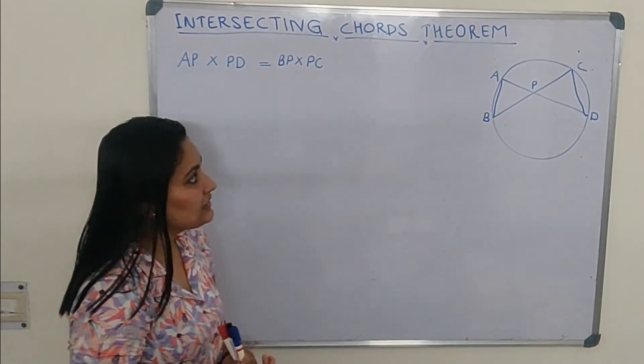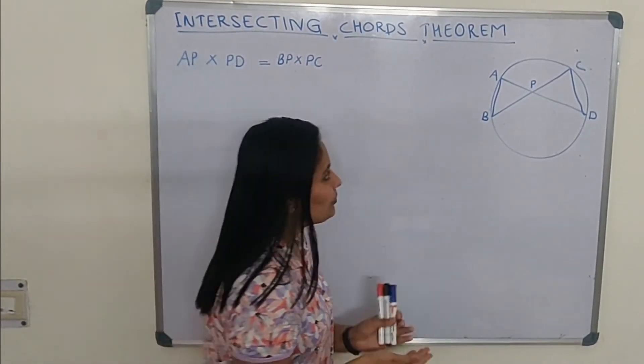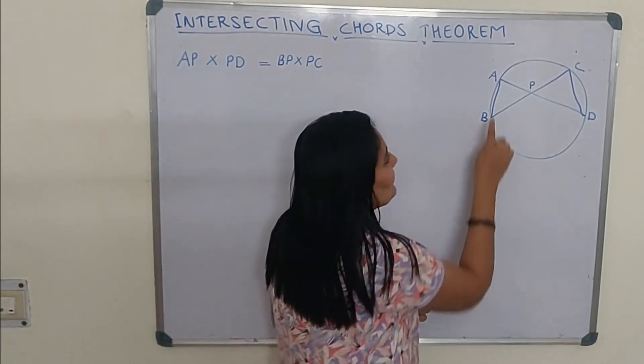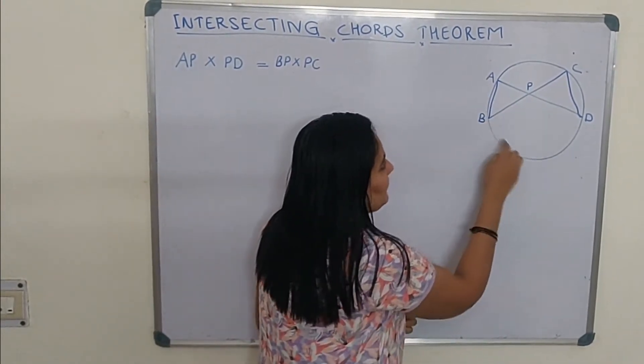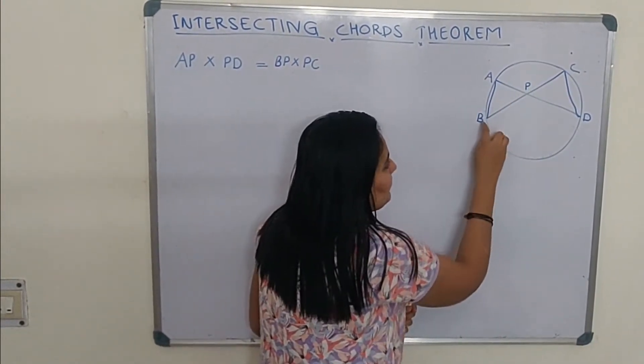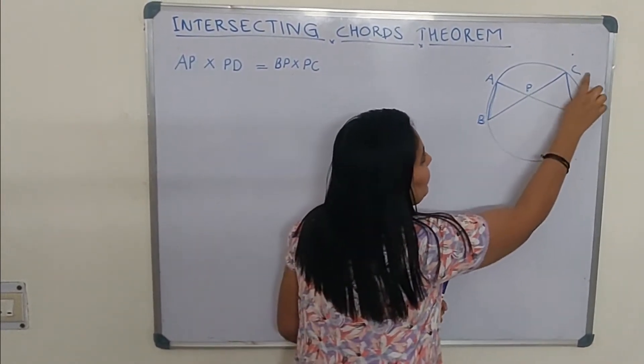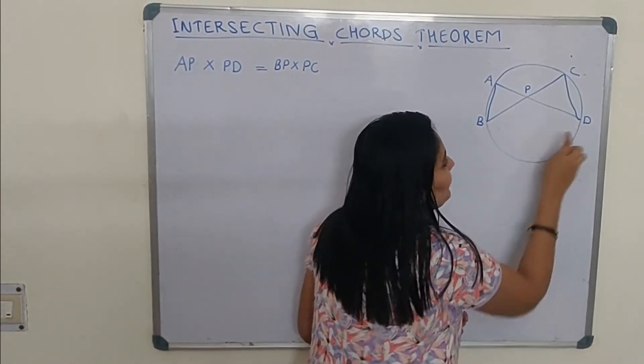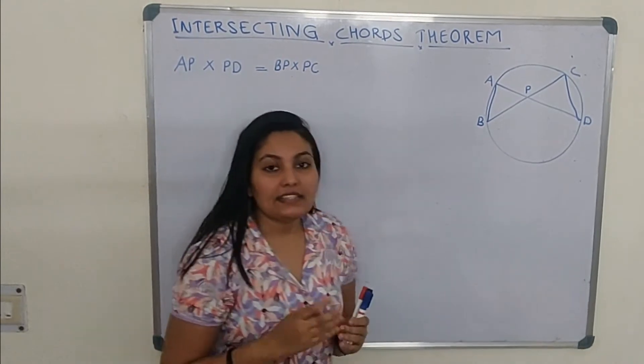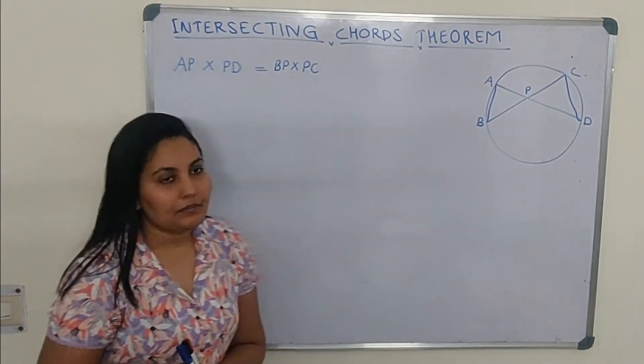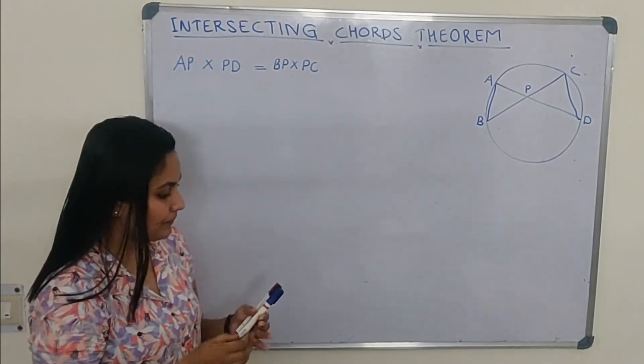Now our plan is we are going to prove that these two triangles, triangle APB and triangle CPD, are similar triangles.